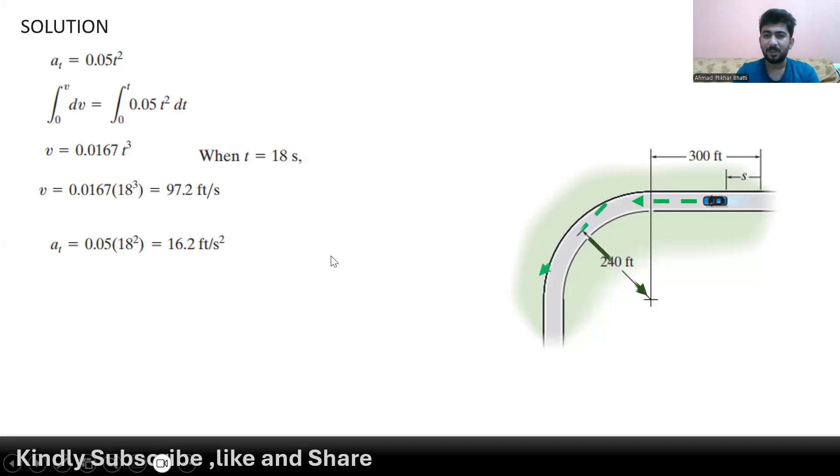As we know that in the curve we also have to find a normal acceleration that is directed towards the center of the curve. Normal acceleration is basically equal to the velocity squared over the radius of the curve.